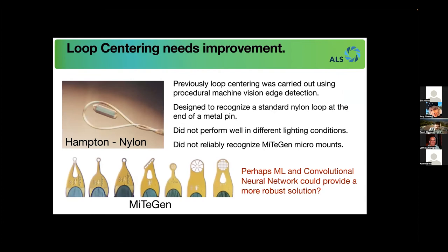This loop centering was carried out using a procedural machine vision technique and was designed to recognize standard tennis-racket-shaped Hampton nylon loops. But it was a little bit finicky. It did not perform very well when lighting conditions were off — if the edge finding didn't work well, it would be hard to see the sample. Then along came Mitigen, which started making all these lithographically manufactured mounts in different shapes and sizes, which the researchers loved — but this procedural machine vision technique just did not work with them. So we started thinking there's got to be a way to use machine learning and convolutional neural networks to do more intelligent recognition of these sample mounts to make our pipeline more robust.